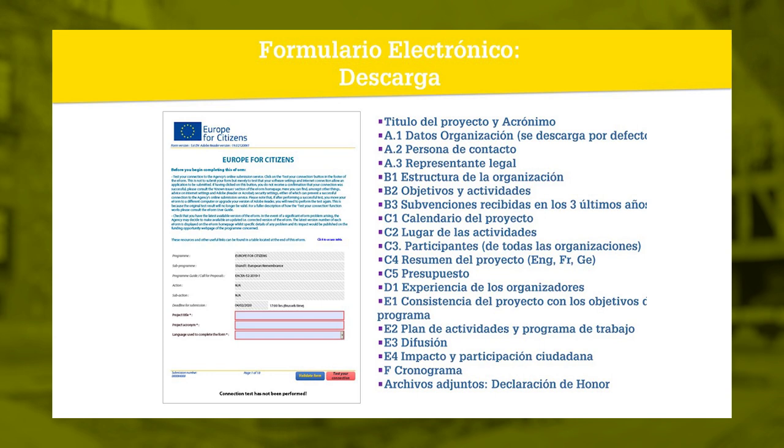Here you have to enter the person responsible for project management — you need a contact. This is the person Brussels will contact: name, address, email. The legal representative is the person who, in an organization — in our case the Ministry, it would be the Secretary of Culture; in an association it could be the president — and it can also be the project coordinator themselves if it's a small organization. There's a wide variety of situations.